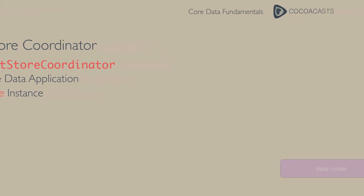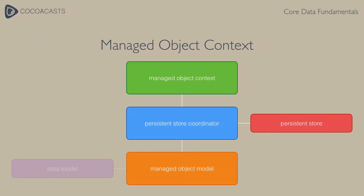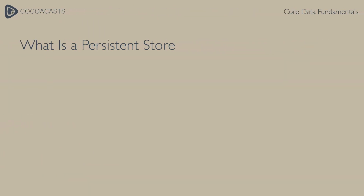The persistent store coordinator keeps a reference to the managed object model, and every parent managed object context keeps a reference to the persistent store coordinator. But what is a parent managed object context? Later in this series we take a closer look at parent and child managed object contexts. This diagram also tells us that the persistent store coordinator is connected to one or more persistent stores.